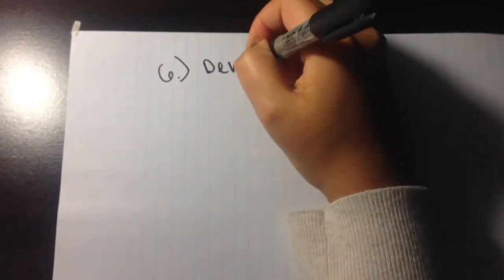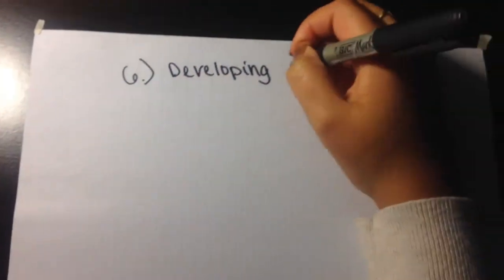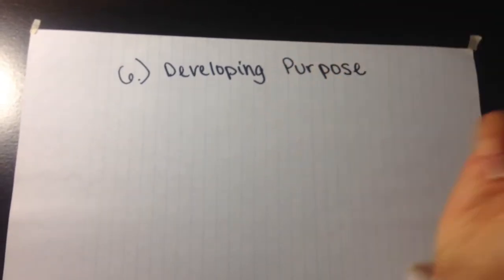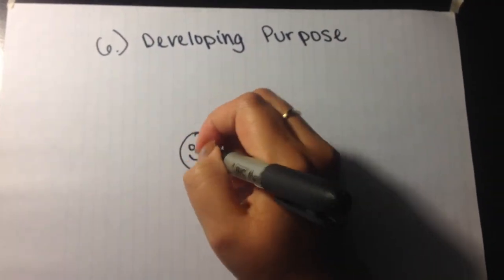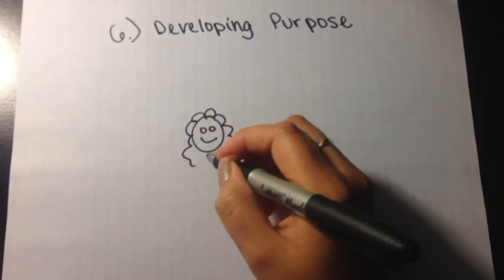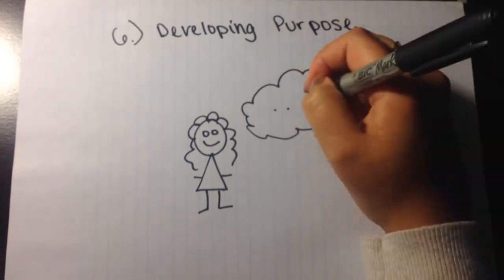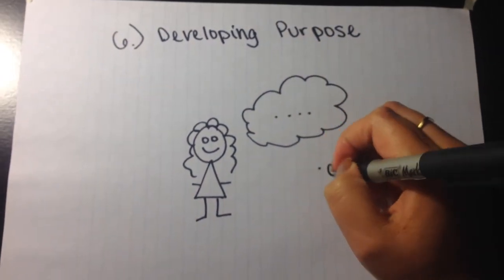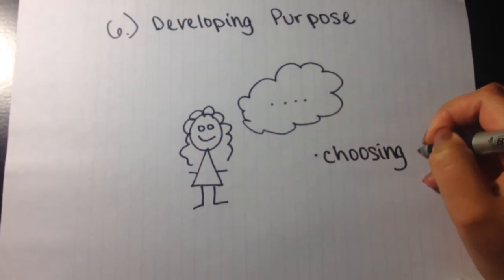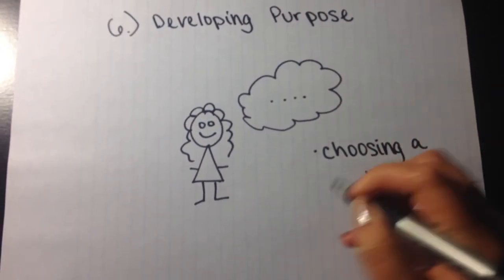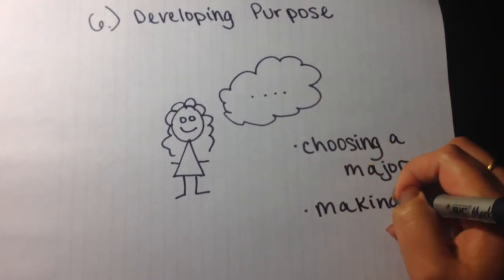The sixth vector is developing purpose. In this vector, individuals commit to the future and follow through on important decisions. This could mean choosing a major or creating goals for the future.